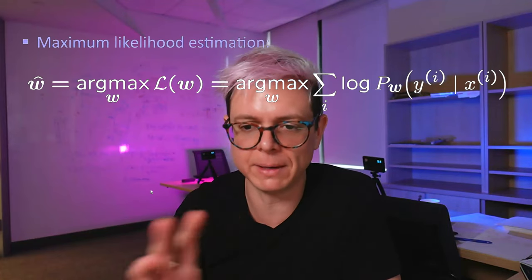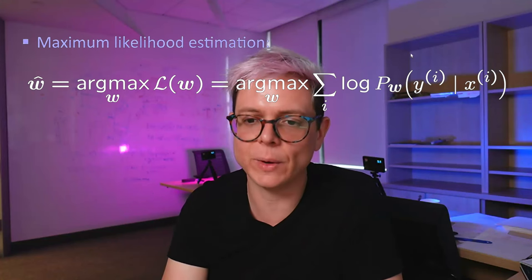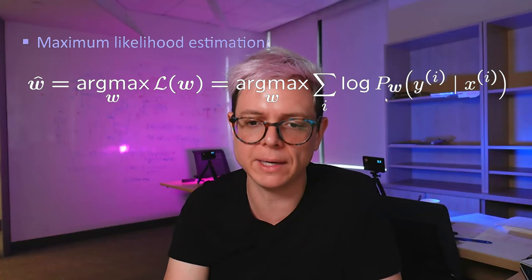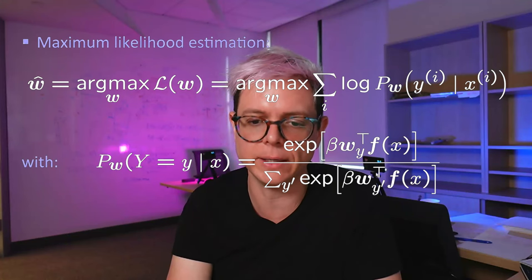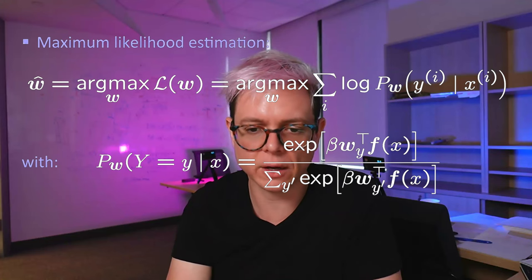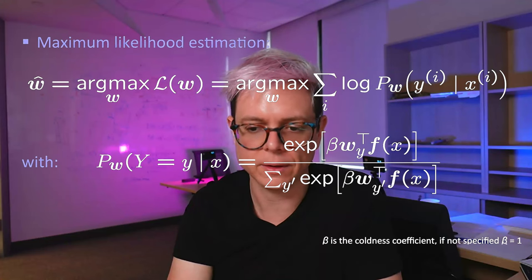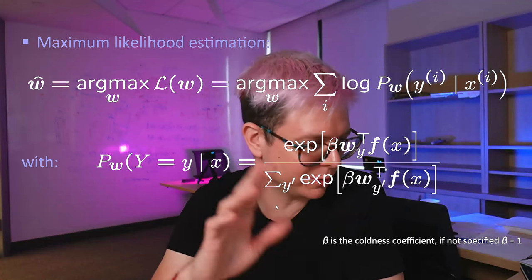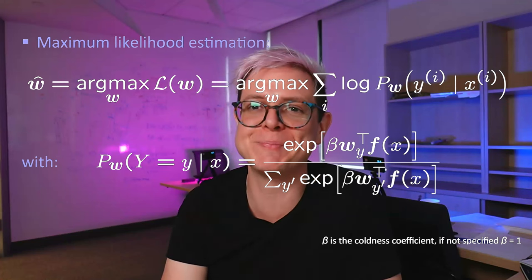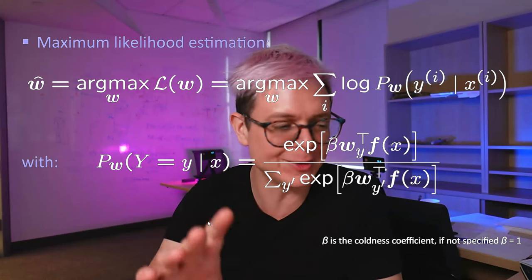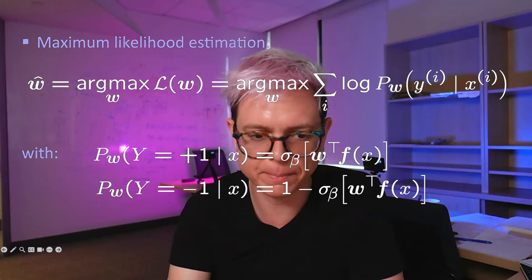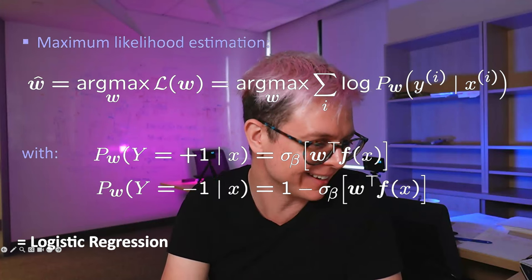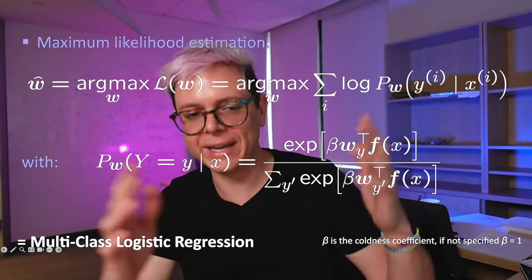The question was how do we find the best weights. The expression for how we parameterize the probability is the exponential of the specific class divided by the sum of all the exponentials. This is called multi-class logistic regression, whereas the one before was called logistic regression. There is a constant here which we don't care about for now — it might be helpful for programming assignment four. Okay, today's lesson — that's where we left off last time.